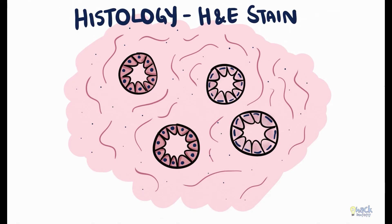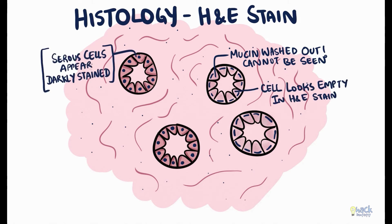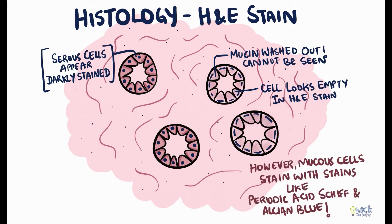Under the light microscope, the mucin granules cannot be seen in an H&E preparation since they get washed out, and hence the cells look empty when stained with H&E stains. However, special stains like periodic acid-Schiff and Alcian blue can stain mucin or the mucus.